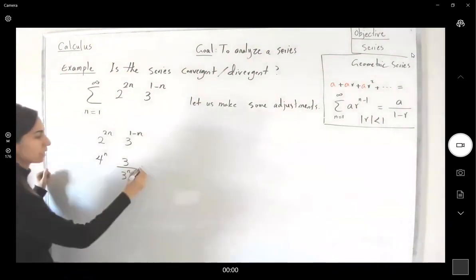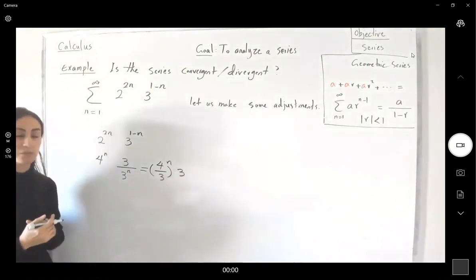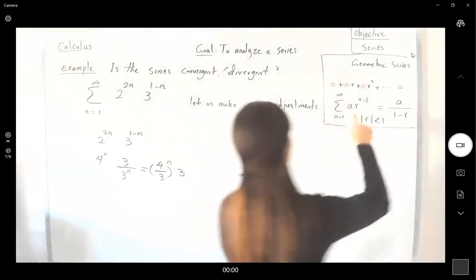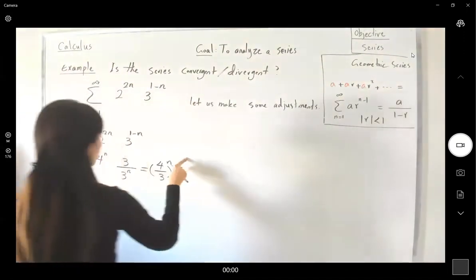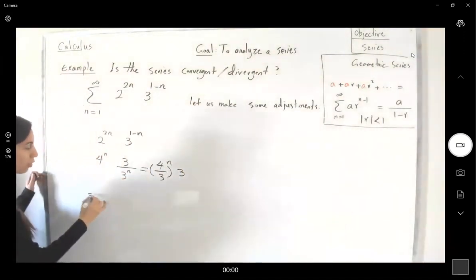Here you can say that this can be written as (4/3)^n times 3. And since I need exponent n minus 1, I can add and subtract 1. And I can write it this way. This is equal to 3.